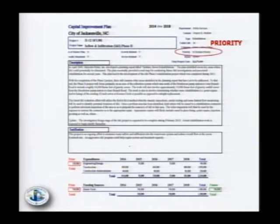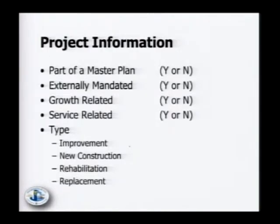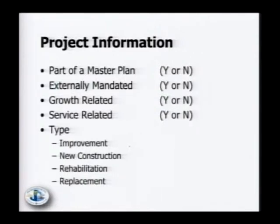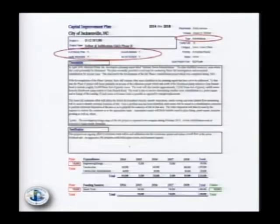We try to identify project priority as high, medium, or low — most infrastructure projects tend to be medium to high. We also identify important characteristics: whether it's part of a master plan, externally mandated by the state, growth-related, or service-related, and what type of project it is — new or an improvement. The project type is located in the upper right, and the other characteristics are near the project name in the middle of the sheet.